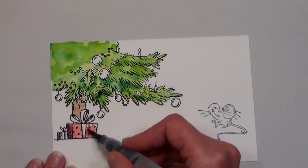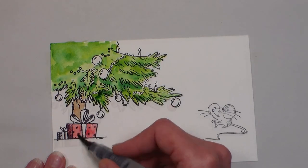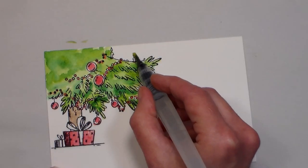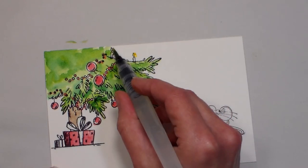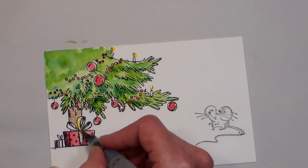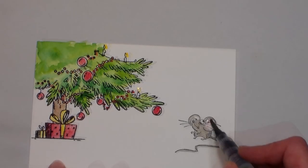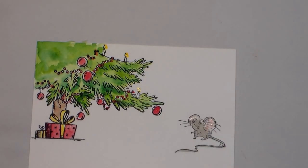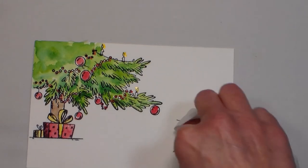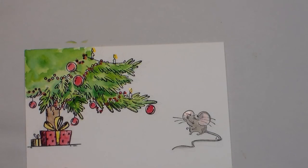So for the tree I did a couple shades of green to give it a little dimension, and then for the presents I did some red, and while I was at it I did the ornaments red, and then I used a little bit of like a golden yellow for the bow in the present and the lights on the candles. I colored my little mouse with gray and pink watercolor and just kind of blotted off some excess there.